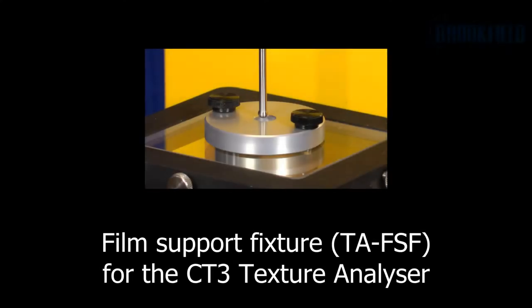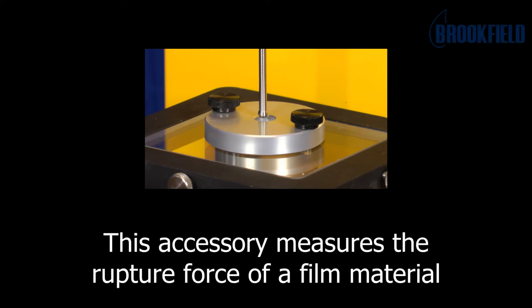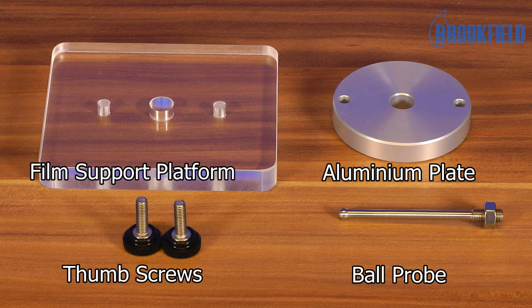This is the film support fixture for the CT3 Texture Analyzer. This accessory measures the rupture force of a film material. Here you see the individual parts of the accessory.